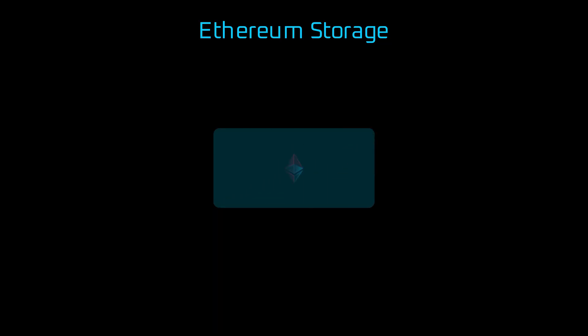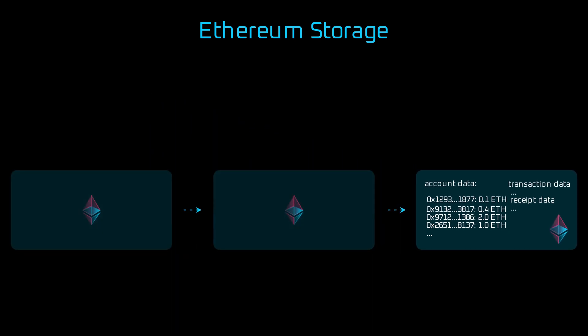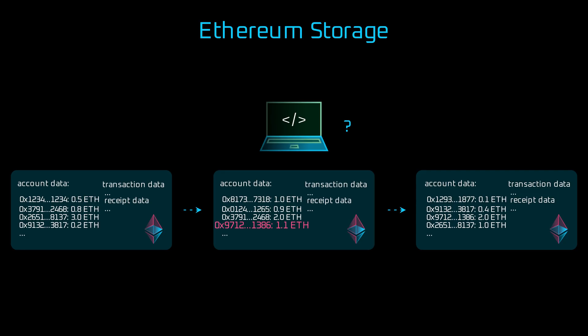Ethereum stores big amounts of data, with millions of accounts and billions of transactions to date. A full node that stores the whole state — which includes all account balances, together with all historical transactions and receipts — takes more than 15 terabytes of disk space, and this number will always keep growing. Which begs the question: how can a computer that doesn't store the whole blockchain be convinced that a certain transaction was successfully mined? What we need is to efficiently prove that overall balances are included in a block.